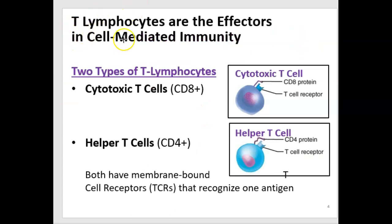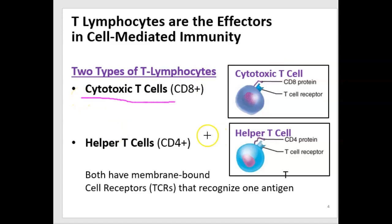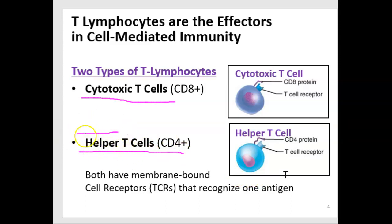T lymphocytes are the main effectors in cell-mediated immunity, and there are two types. One type is called a cytotoxic T cell, the other is called a helper T cell. But don't let the name 'helper' fool you — they're very powerful cells.